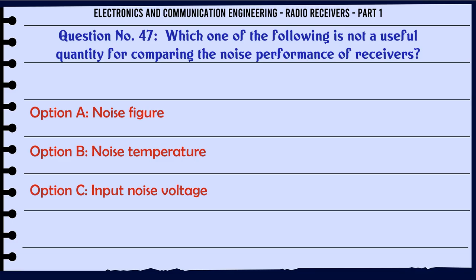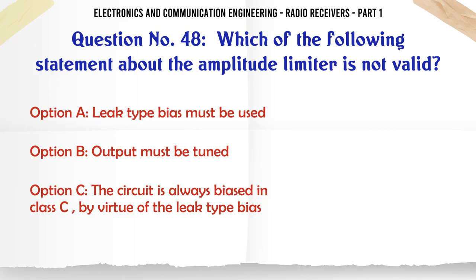Which one of the following is not a useful quantity for comparing the noise performance of receivers? A. Noise figure. B. Noise temperature. C. Input noise voltage. D. Equivalent noise resistance. The correct answer is input noise voltage.